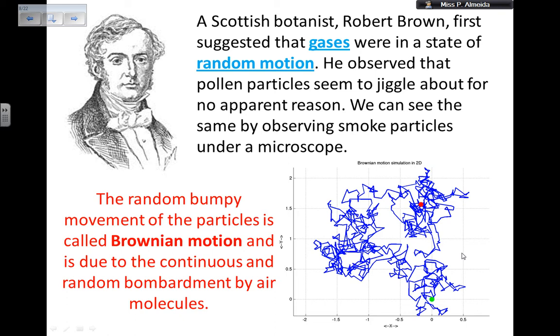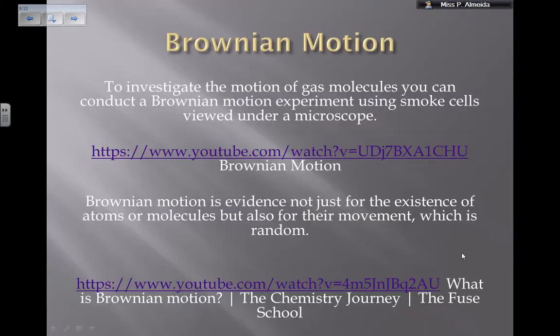Those random and continuous collisions make the molecules move around a little bit more. This is a little visual and not easy to see, but you may be able to observe it under a smoke microscope. At my school we only have one and it's not quite working, but if you cannot see it that way, there are two videos here that will help you understand Brownian motion.